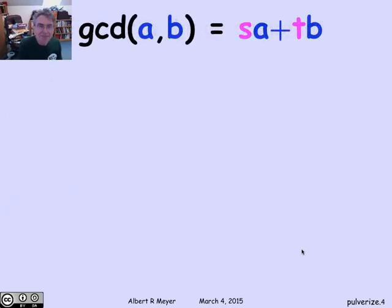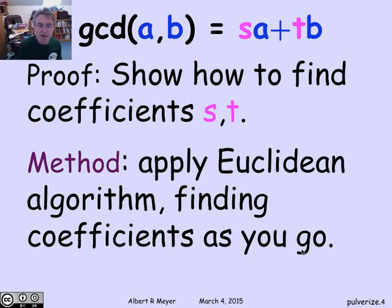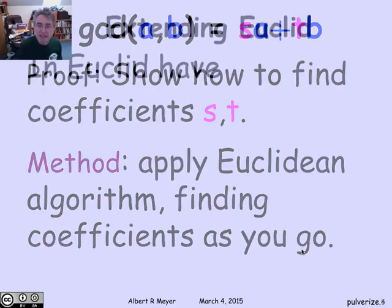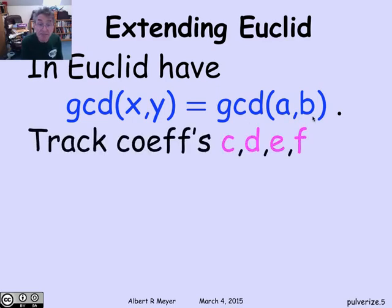How do we get S and T? Well, the basic idea is that we're going to find these coefficients by applying the Euclidean algorithm. And as we go, we're going to be calculating coefficients. And eventually, when we're all finished, we'll wind up with the S and T. Specifically, let's remember the Euclidean algorithm starts off with A and B, and then it has two registers or numbers, x and y, that it keeps updating. And the invariant is that the GCD of the x and y that are being continually updated by the Euclidean algorithm stays the same. It's always the GCD of A and B. So what we're going to do is just keep track of coefficients, called them C, D, E, and F.